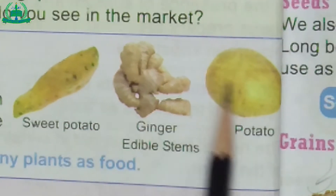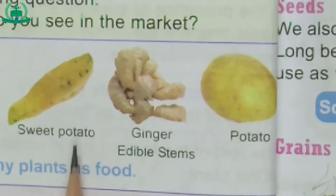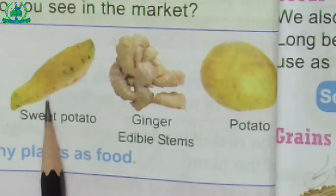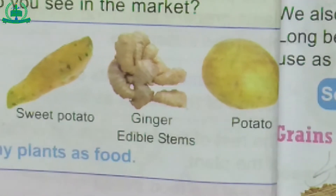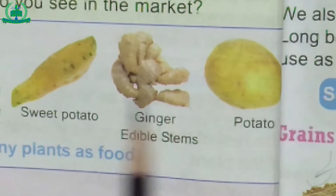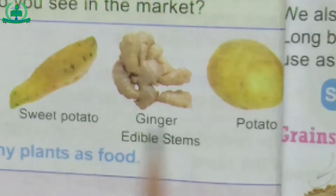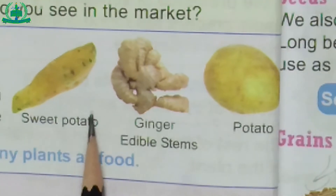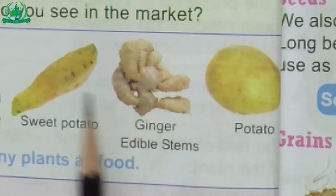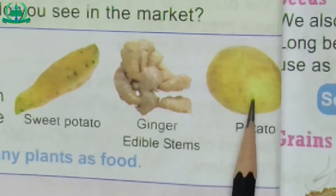We eat stems of many plants. Potato, sweet potato, onion and ginger are some examples of edible stems.